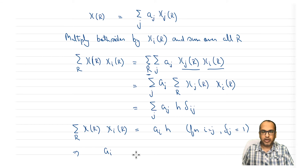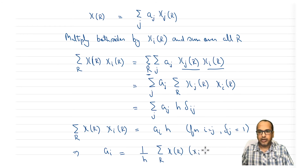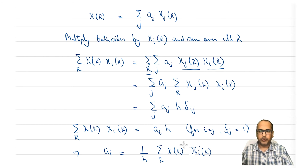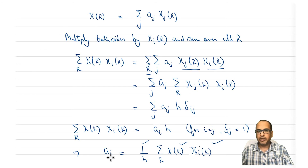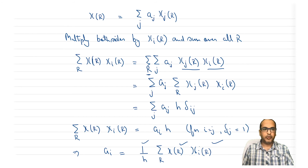Since we have delta_IJ, in the sum over J only the term where J equals I survives — all others go to zero. So we are left with AI * H on the right side, and sum over R of chi(R) * chi_I(R) on the left. Therefore: AI = (1/H) * sum over all R of chi(R) * chi_I(R), where chi(R) is the character under the reducible representation and chi_I(R) is the character under the irreducible representation. Since we know H and both characters, we can calculate AI.